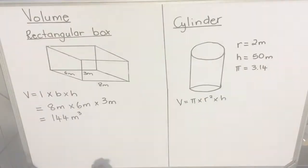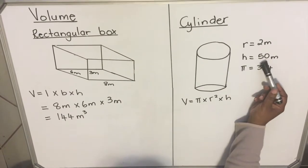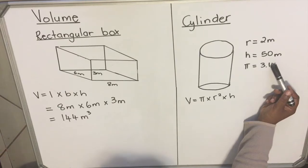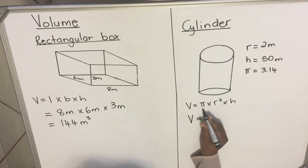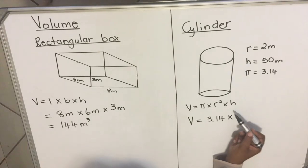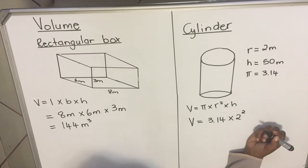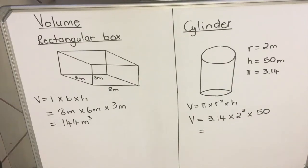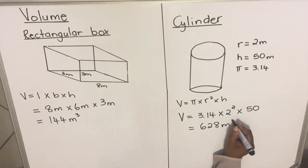Let's look at the volume of a cylinder. Here we are given the cylinder and its dimensions. The radius is 2 meters and the height of the cylinder is 50 meters. The cylinder is calculated with pi — pi is a number that will be given in your exam, it's 3.14. So the volume equals pi, which is 3.14, multiplied by the radius squared — that's 2 times 2 — multiplied by the height of 50 meters. Punch it into your calculator, and the volume of this cylinder is 628 meters cubed.